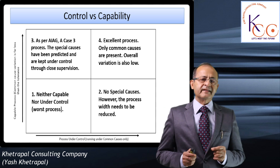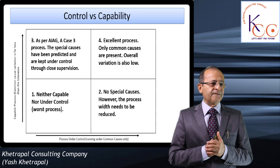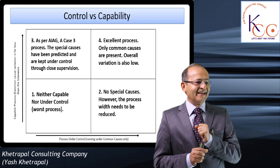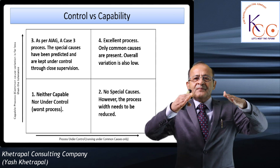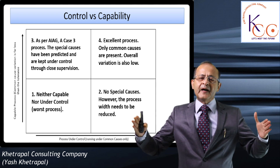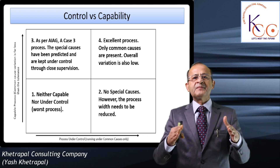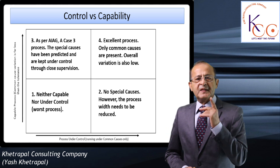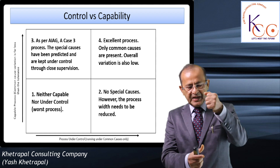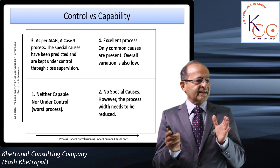Stage 1 needs immediate intervention. Moving to Stage 2: there are no special causes, meaning the process is under control, but the overall process width is too much — using the maximum amount of tolerance with hardly any margin left. We need to reduce the process width, maybe by applying a better machine or reducing the clearance between the pillar and the bush.